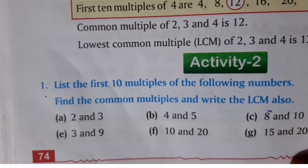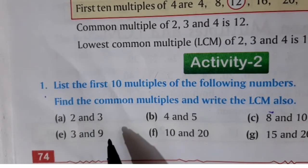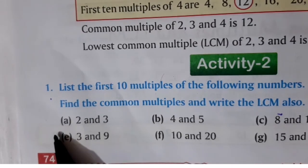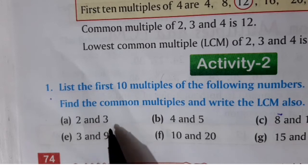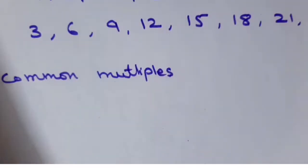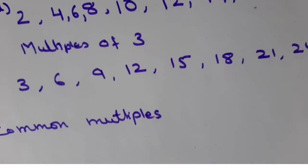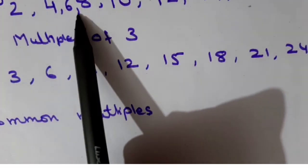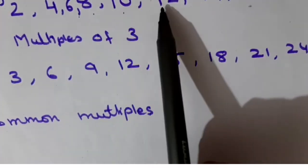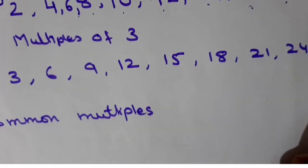We will start with the first part, that is A: 2 and 3. First we have to write the first ten multiples of two. Multiples of two are 2, 4, 6, 8, 10, 12, 14, 16, 18 and 20.